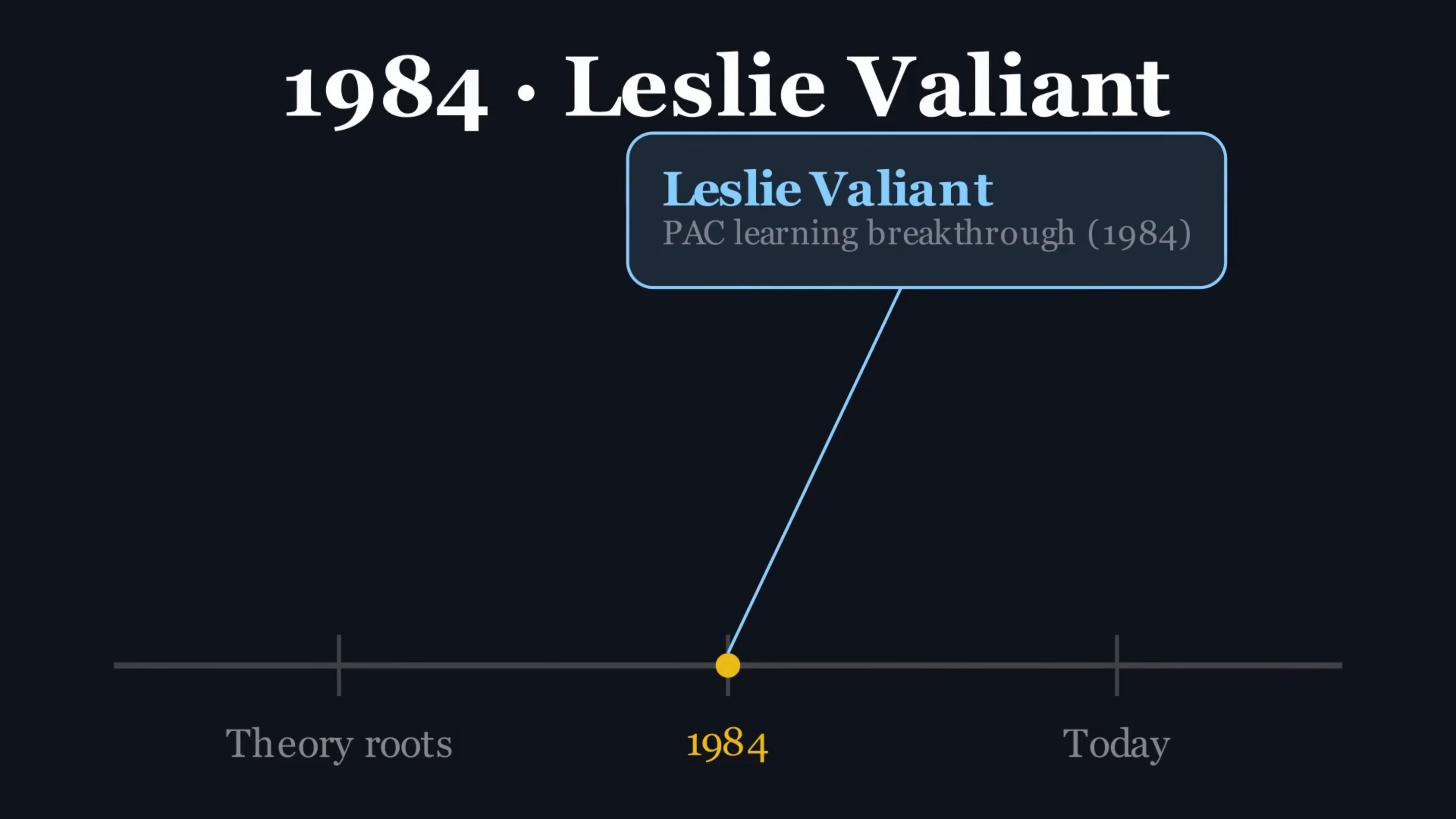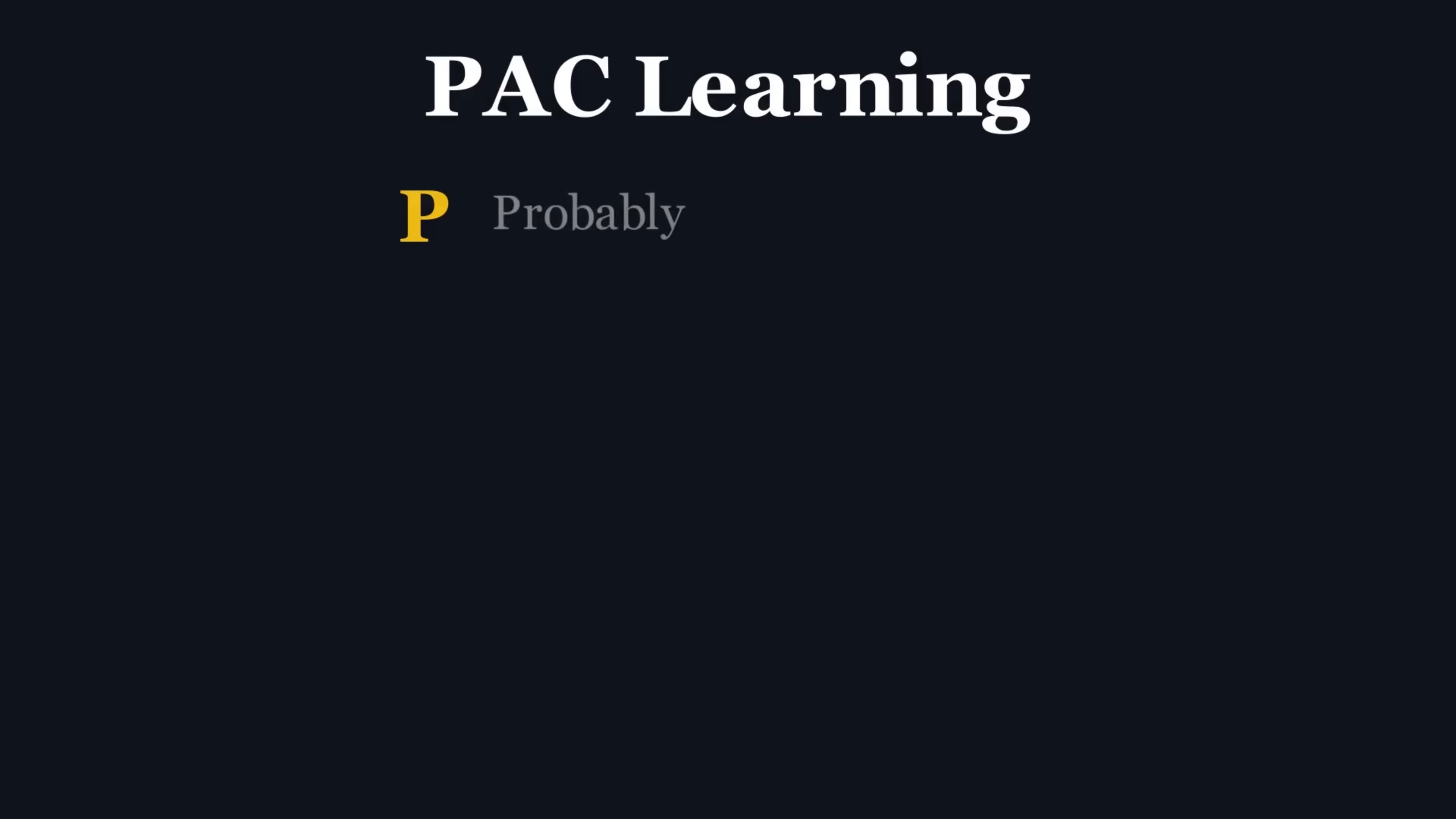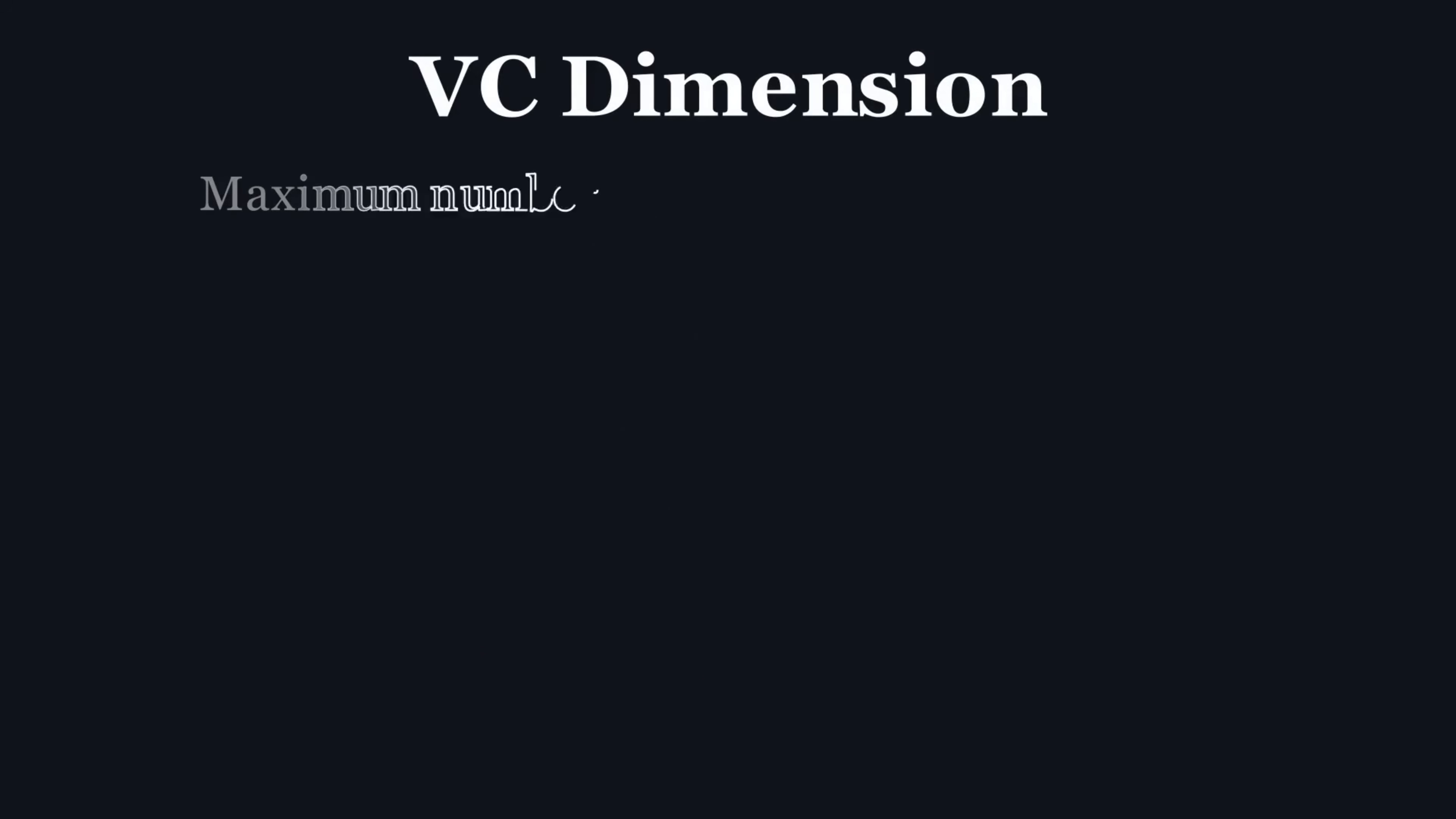The answer came in 1984, from a computer scientist named Leslie Valiant. He didn't try to prove that a machine could learn to be perfect. Instead, he created a framework to prove that it could be probably, approximately, correct. The genius is right there in the name. It's not a guarantee of perfection, but a mathematical guarantee on imperfection.